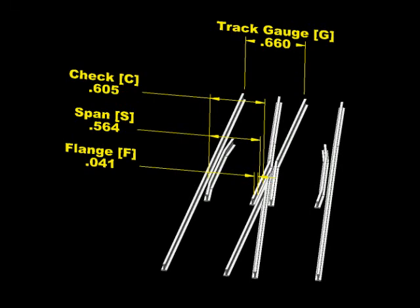I have each of the controlled sizes dimensioned here. We have a check gauge set to the NMRA minimum of 605 thou, the span set to the NMRA maximum of 564 thou.